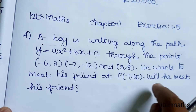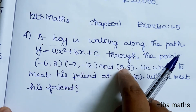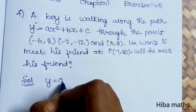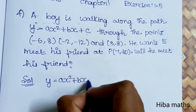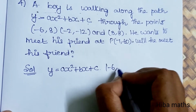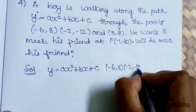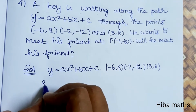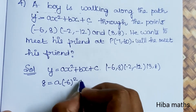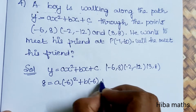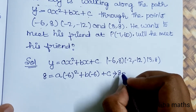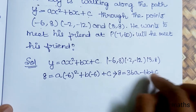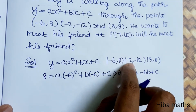LHS and RHS must be equal. First, we have 3 equations and we can solve for the solution using ax² + bx + c. For the 1st point (-6, 8): 8 = a(-6)² + b(-6) + c, which gives 36a - 6b + c = 8. For the 2nd point (-2, -12): substitute to get a(-2)² + b(-2) + c = -12.